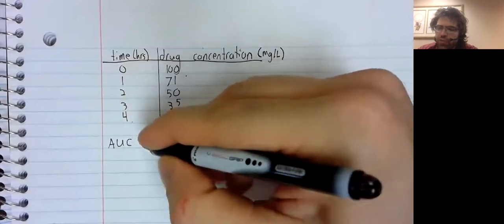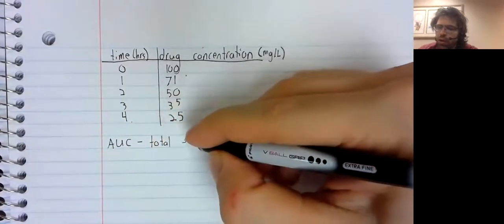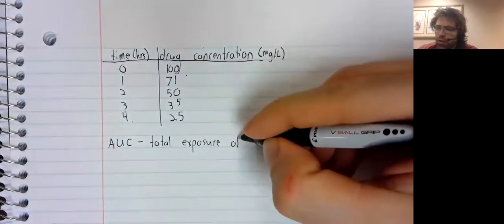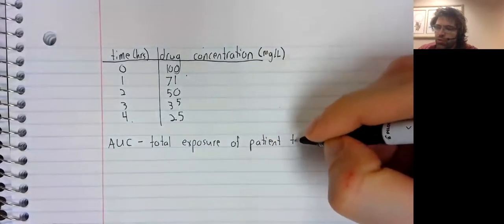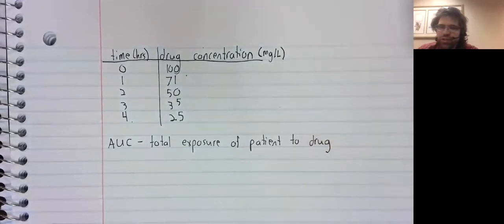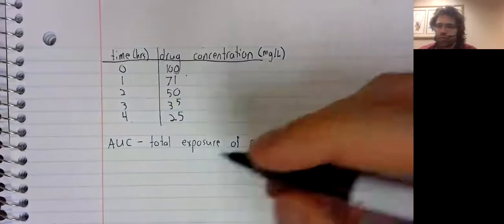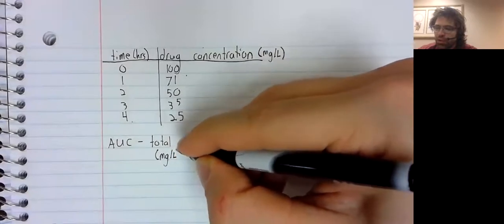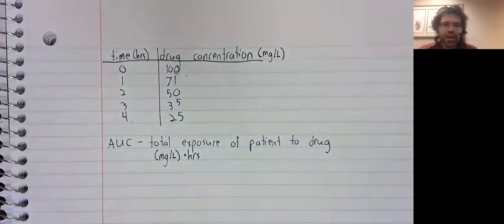The AUC measures the total exposure of the patient to the drug, and its units are the time units times the drug concentration units. So in this case, milligrams per liter times hours.